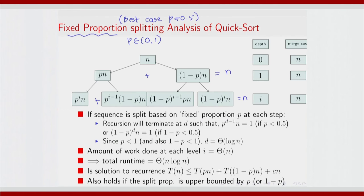This sequence is split based on a fixed proportion at each step. This will go on to a depth d such that p^d · n equals 1, or (1-p)^d · n equals 1. We are only concerned with the extreme cases — the first case when p is less than 0.5. So we are concerned with min(p, 1-p), and the termination is basically when (min(p, 1-p))^(d-1) · n equals 1.